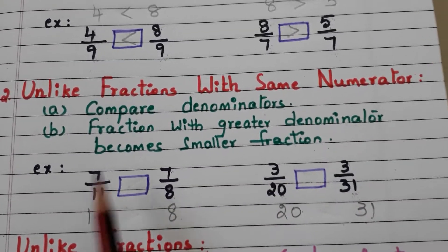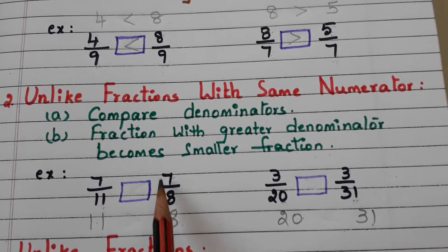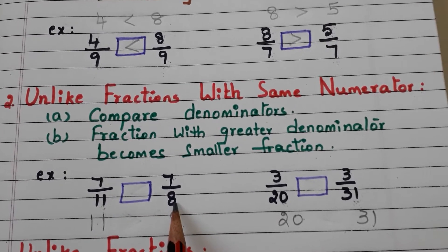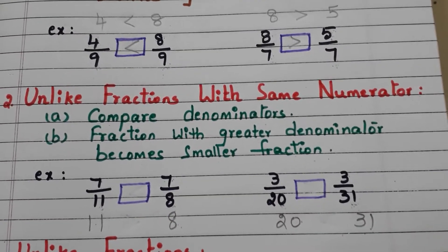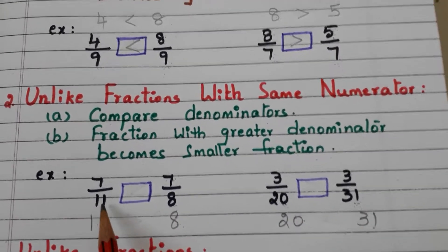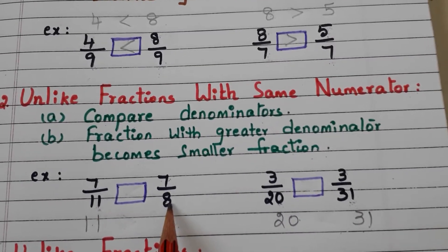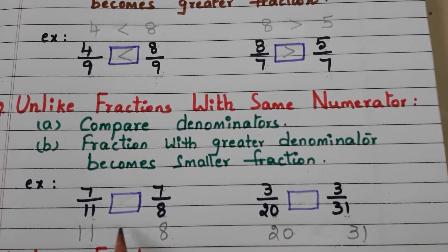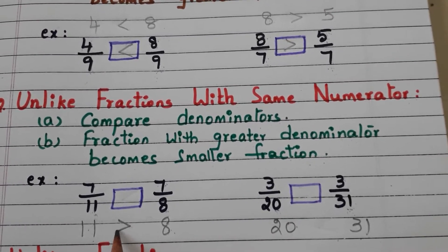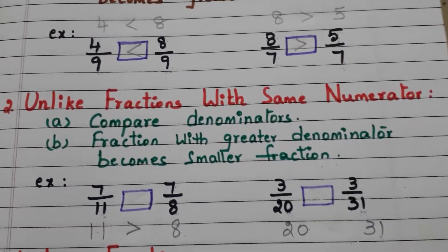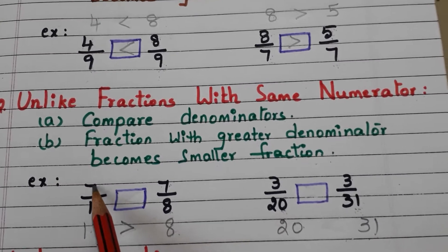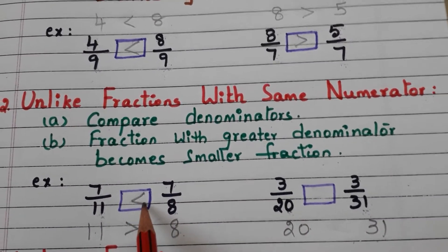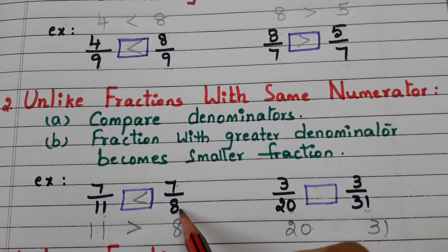Here in the example we have the same numerator and the denominators are different. Let us see how to compare. First we compare the denominators: here 11 and 8, and 11 is greater than 8. So the fraction 7 by 11 becomes lesser than 7 by 8.